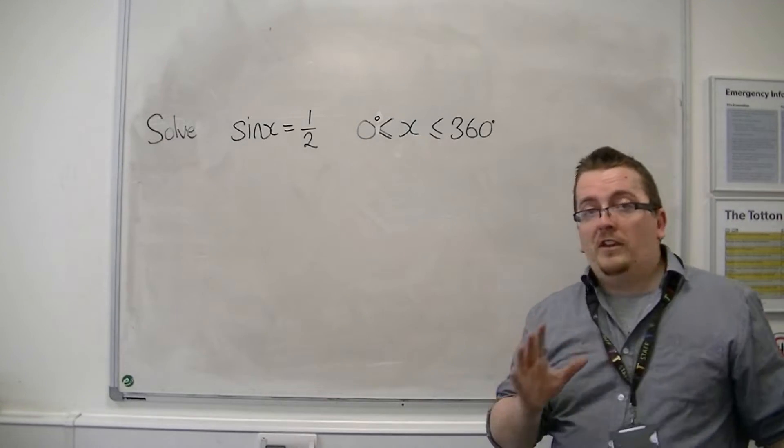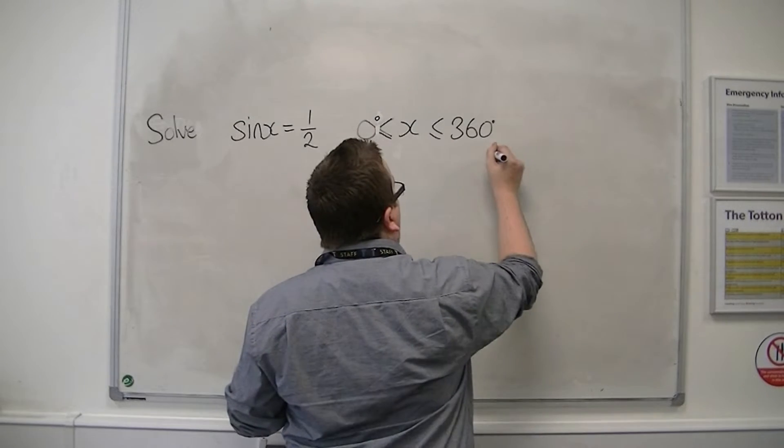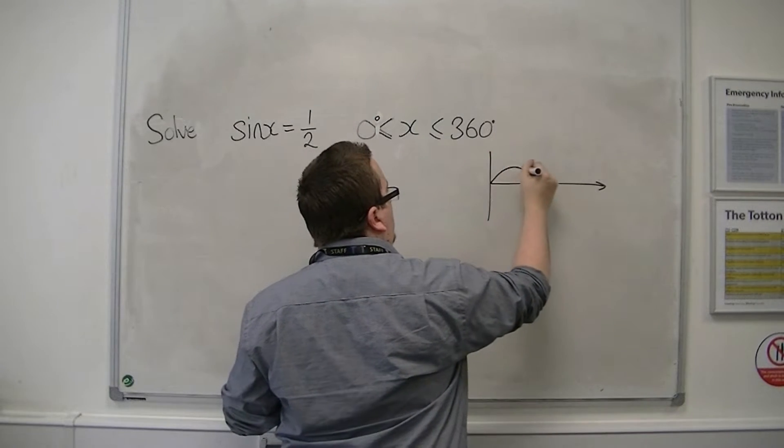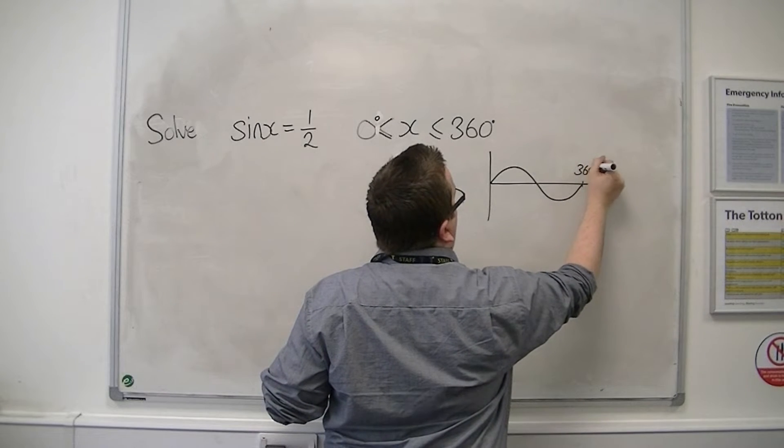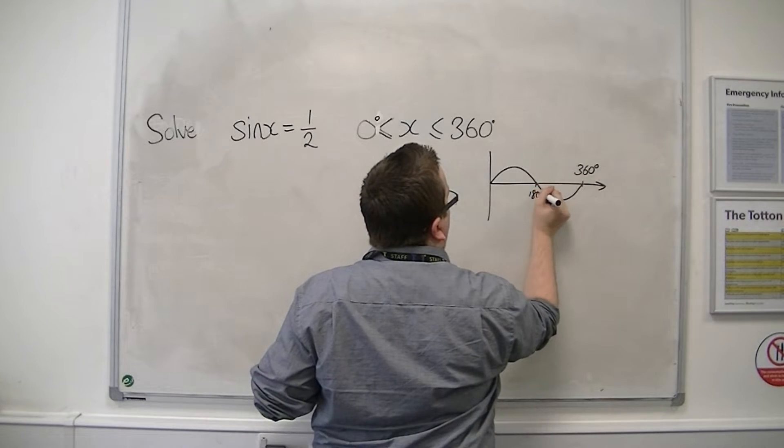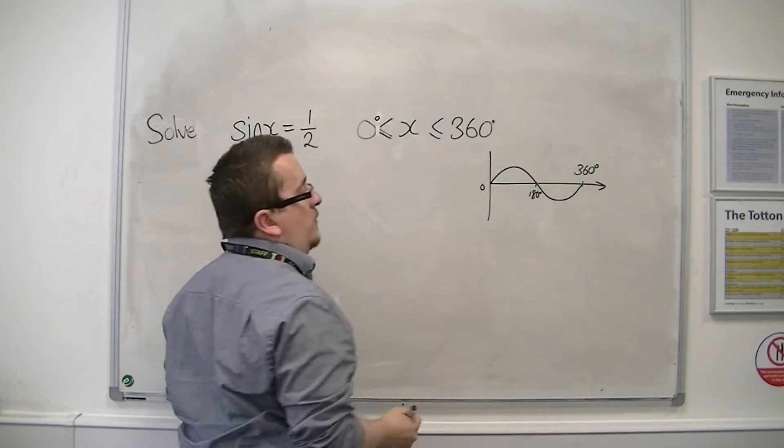So first things to do is to sketch sin. So sin looks like this, and between 0 and 360 we're going to have 0, 180, and 360.